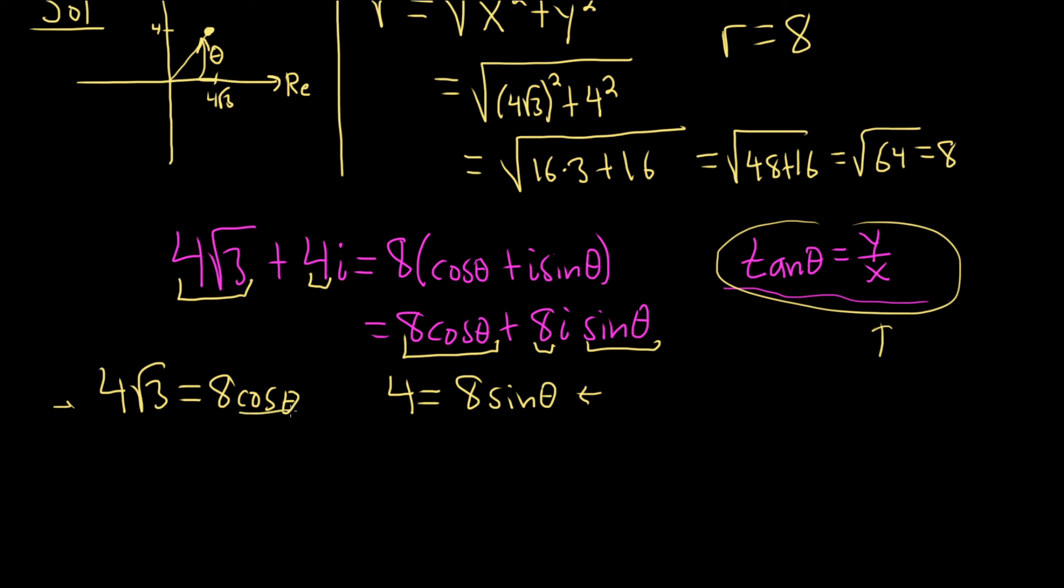Solving this one for cosine, we'll divide by 8. So we get cosine of theta equals 4 square root of 3 over 8. So cosine of theta is equal to square root of 3 over 2. Solving this one for sine gives us sine theta equals 1 half.